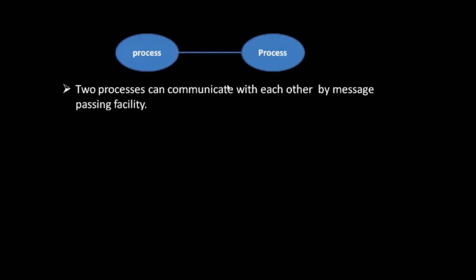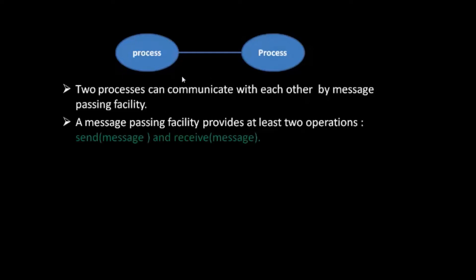Hello friends, welcome back. In this tutorial we will study about message passing system. Two processes can communicate with each other by using a message passing facility. A message passing facility provides a mechanism to allow two processes to communicate with each other, and it provides at least two operations: send message and receive message.